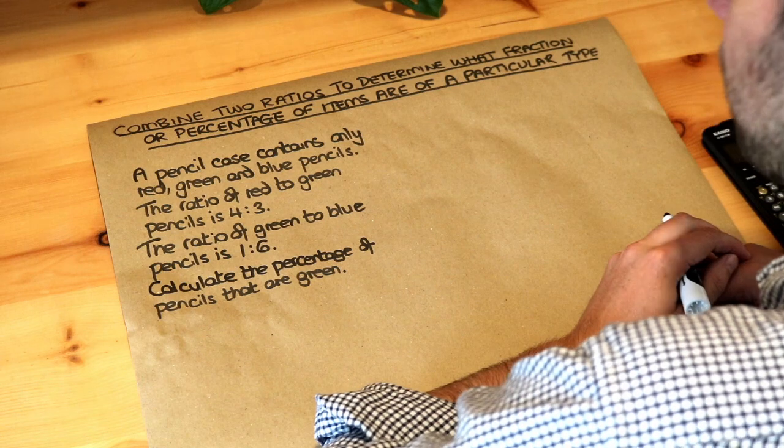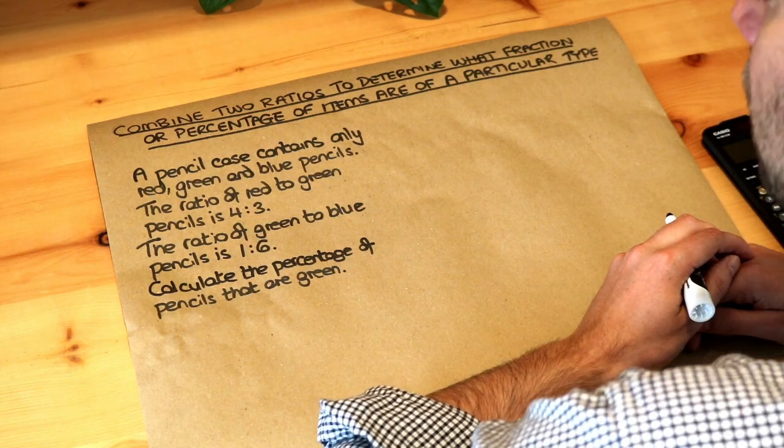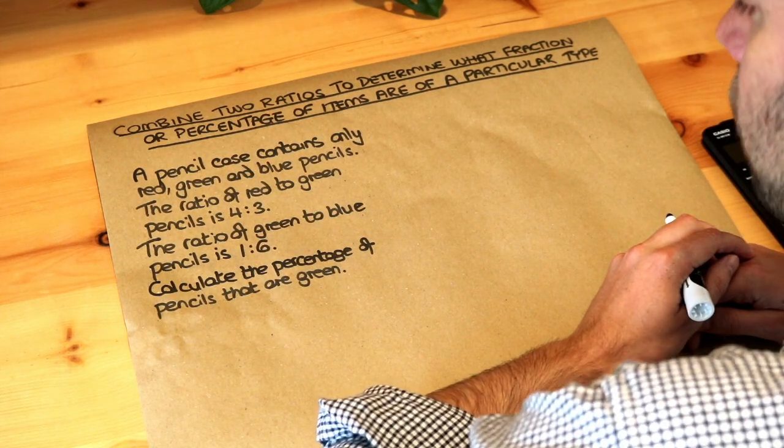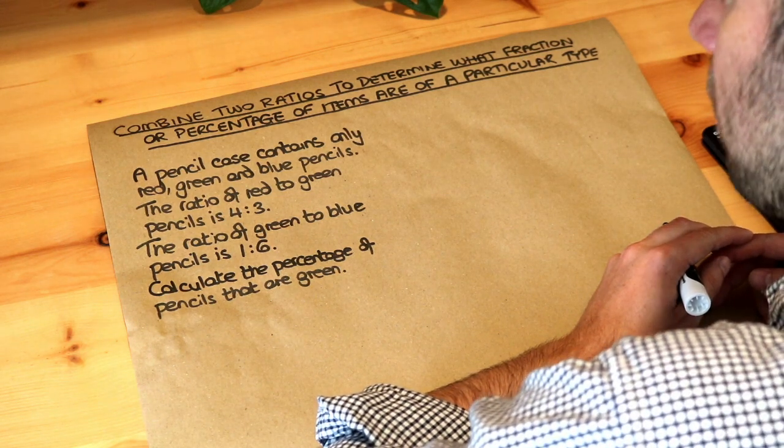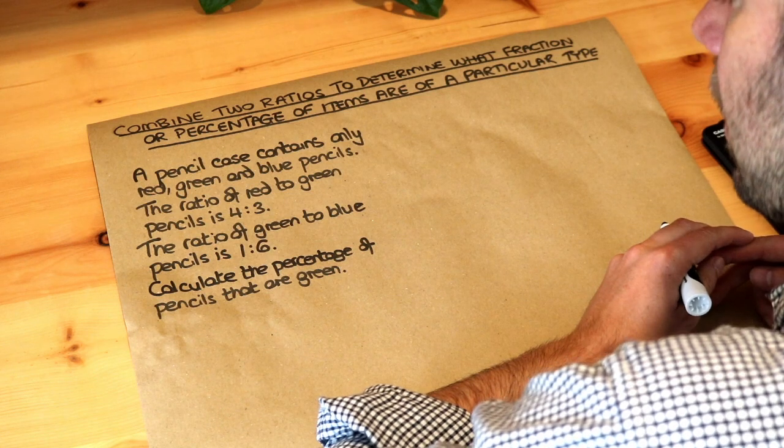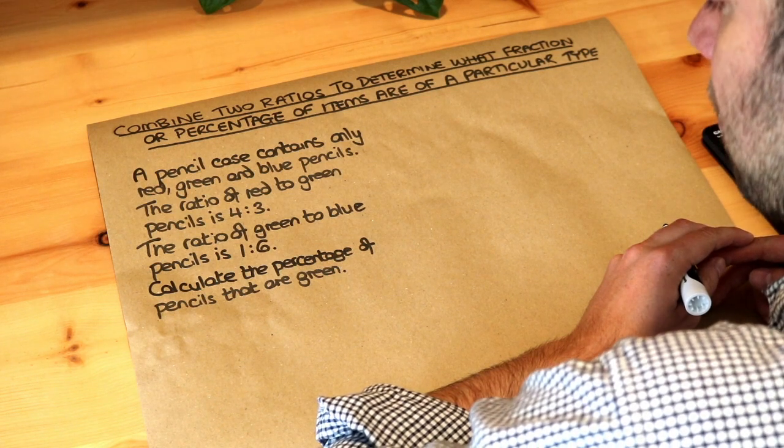So let's read the question. A pencil case contains only red, green, or blue pencils. The ratio of red to green pencils is four to three. The ratio of green to blue pencils is one to six. Calculate the percentage of pencils that are green.